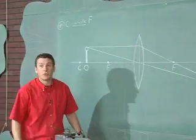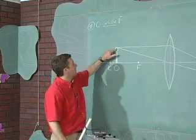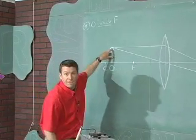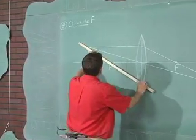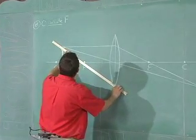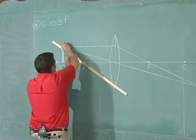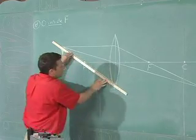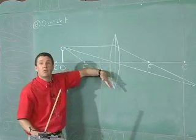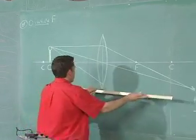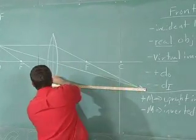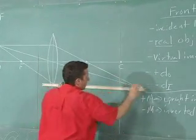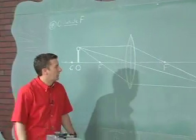And our third ray will be a ray from the top of the object through the other focal point. And that's going to be this one. So it'll extend from the top of the object through the focal point to the lens. And then it will bend it towards the principal axis in a parallel nature. So here's our image.